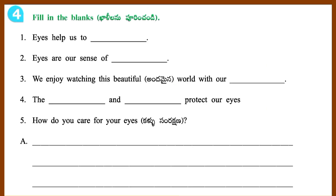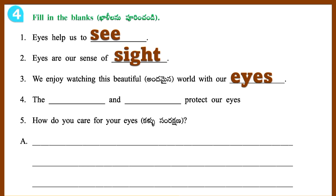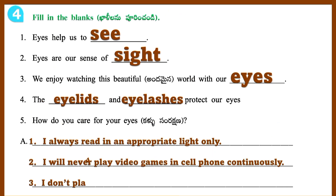Section 4: Fill in the blanks. 1. Eyes help us to see. 2. Eyes are our sense of sight. 3. We enjoy watching this beautiful world with our eyes. 4. The eyelids and eyelashes protect our eyes. 5. How do you care for your eyes? Answer: I always read in appropriate light only. I will never play video games or use a cell phone continuously. I don't play with sharp and pointed objects.